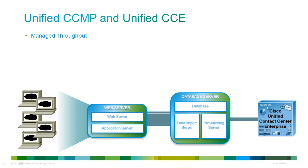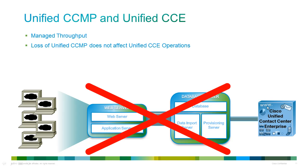This time-slot approach is designed to have zero impact on Unified CCE and is achieved using the provisioning server's built-in request management system, which queues requests within the provisioning server until they can be executed. In the event that Unified CCE suffers a catastrophic failure, this will not obstruct you from performing configuration or operational changes in Unified CCMP, as the normal Unified CCE tools are always available.